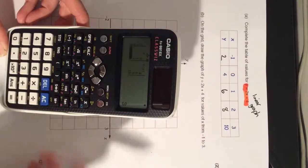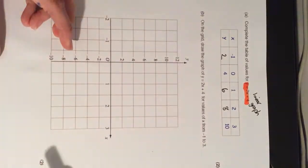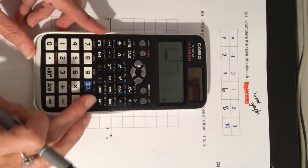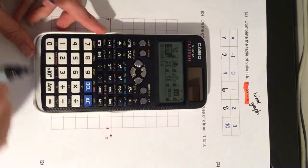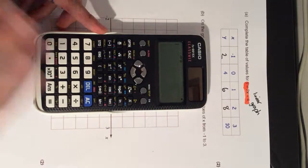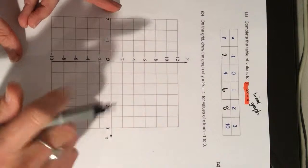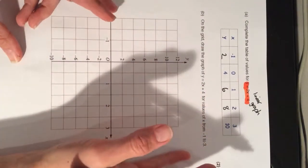We filled in our table of values using the table function. And don't forget, when you finish using the table function, if you press menu and 1, that takes you back to where you need to be to use the calculator as normal. Now, I have my table of values. I can plot them as coordinates.